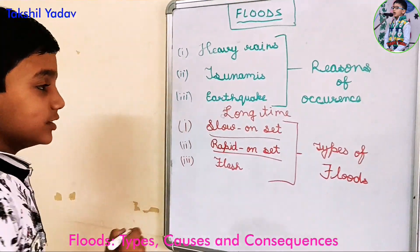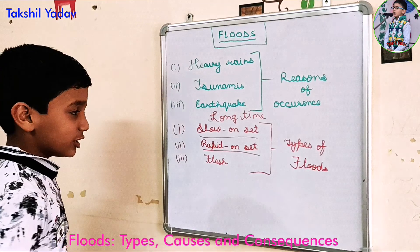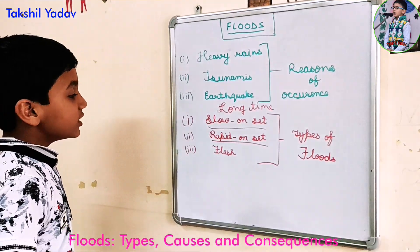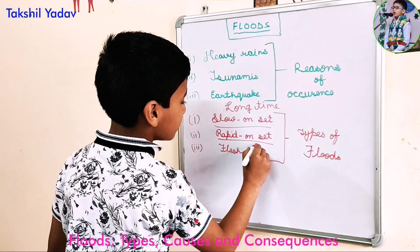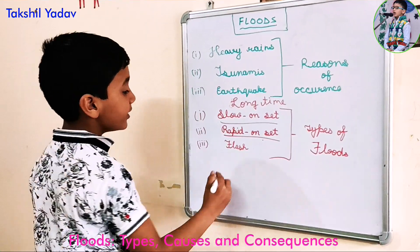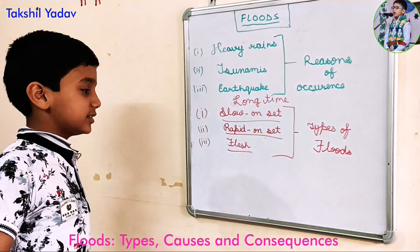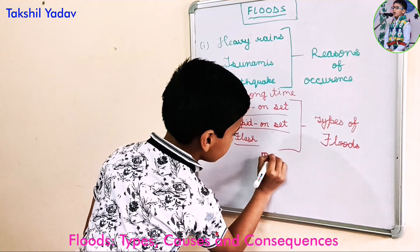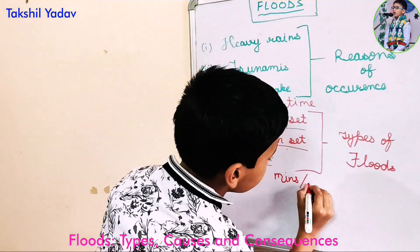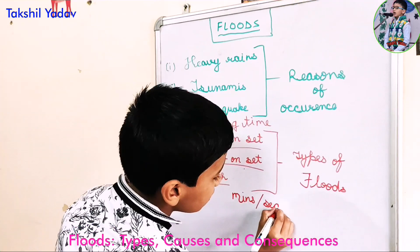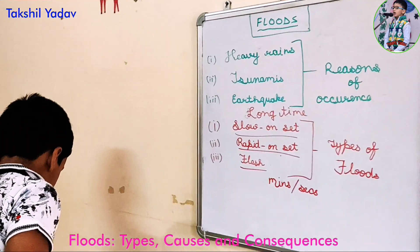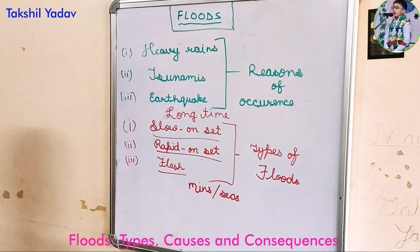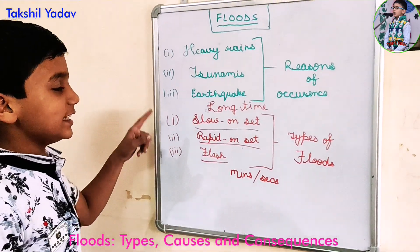The rapid onset floods take less time than the slow onset floods, but they still give us time to escape — they might take a day or two. The third one is flash floods, which occurs in minutes or seconds. It is a flood that occurs in the least time.